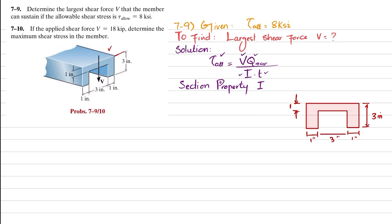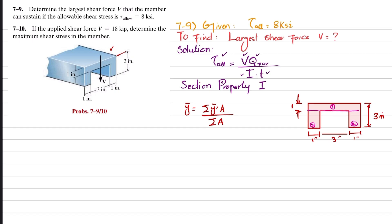We will find y-bar, the location of the neutral axis from the top, using the formula: y-bar = Σ(y'·A) / ΣA. We can divide the cross-section into two portions. The first is the top flange (area A1), and the second is the web (area A2). The formula becomes: y-bar = (y1'·A1 + 2·y2'·A2) / (A1 + 2·A2).